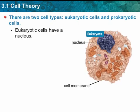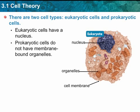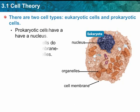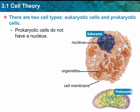Eukaryotic cells have a nucleus — it's the largest organelle. Prokaryotic cells do not have membrane-bound organelles, but eukaryotic cells do. So eukaryotic cells have organelles and a nucleus; prokaryotic cells do not have a nucleus.